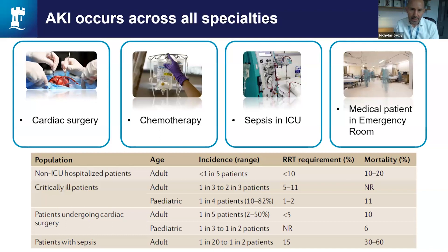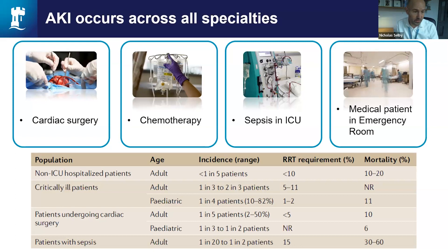Within the spectrum of AKI, it's possible to delineate differences between the various clinical settings in which AKI occurs. This heterogeneity of the syndrome is something we'll keep returning to throughout this webinar. Common scenarios include cardiac surgery, following chemotherapy, sepsis in the ICU, and probably the biggest case load — acute medical admissions or medical patients in the emergency room. The table at the bottom illustrates both the range of incidence, requirement for kidney replacement therapy, and different outcomes. Very strikingly, AKI associated with sepsis has particularly bad outcomes.